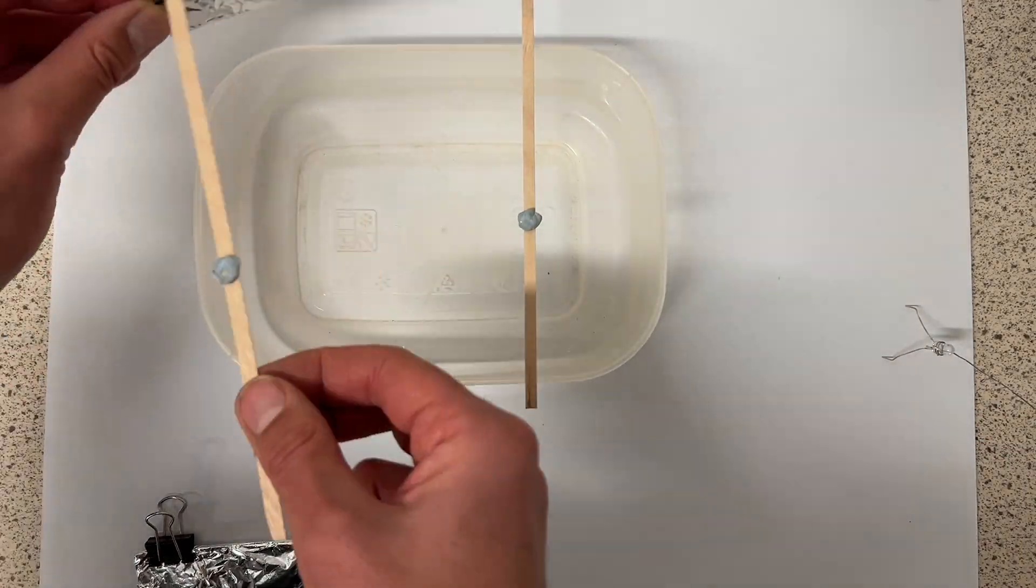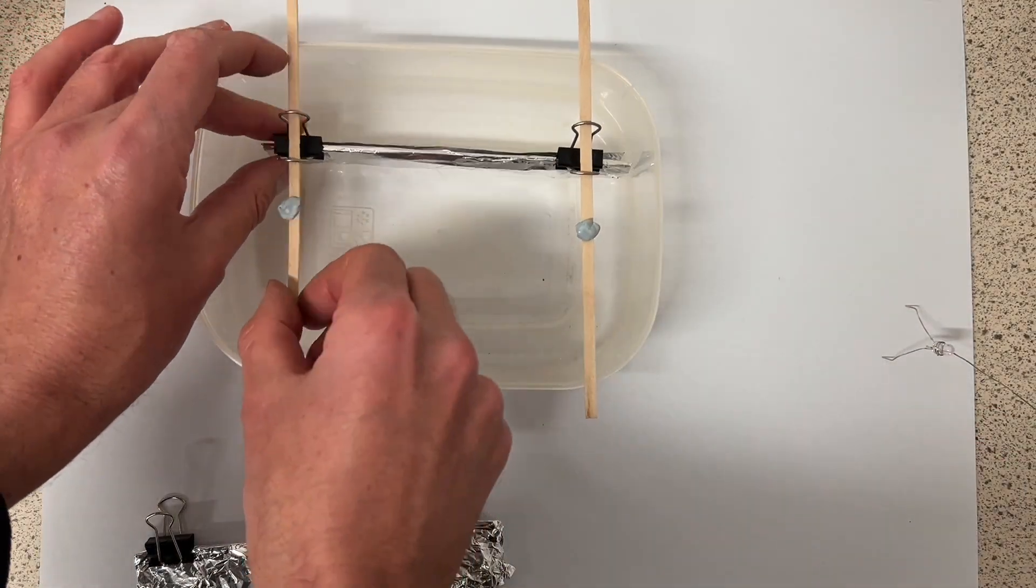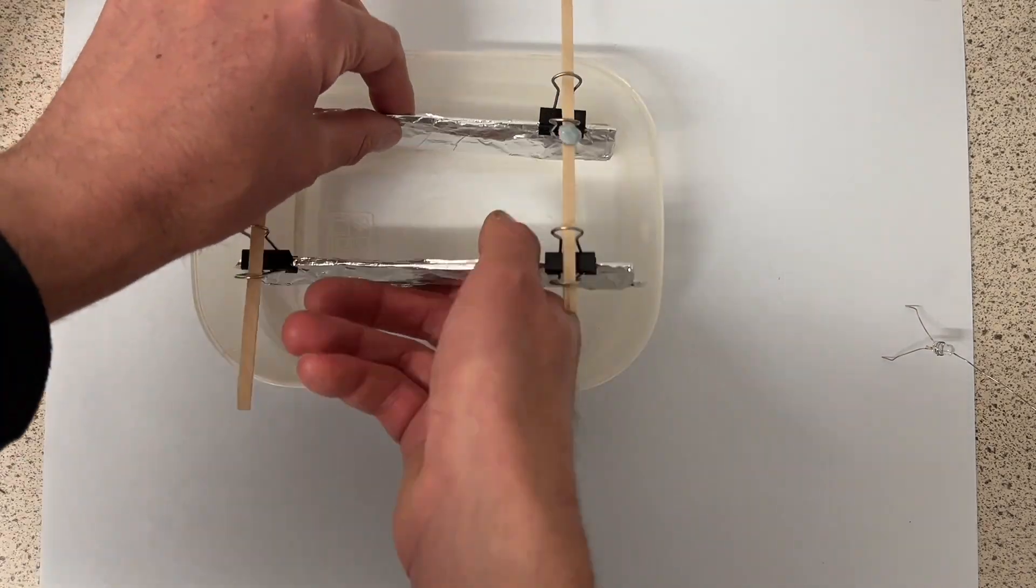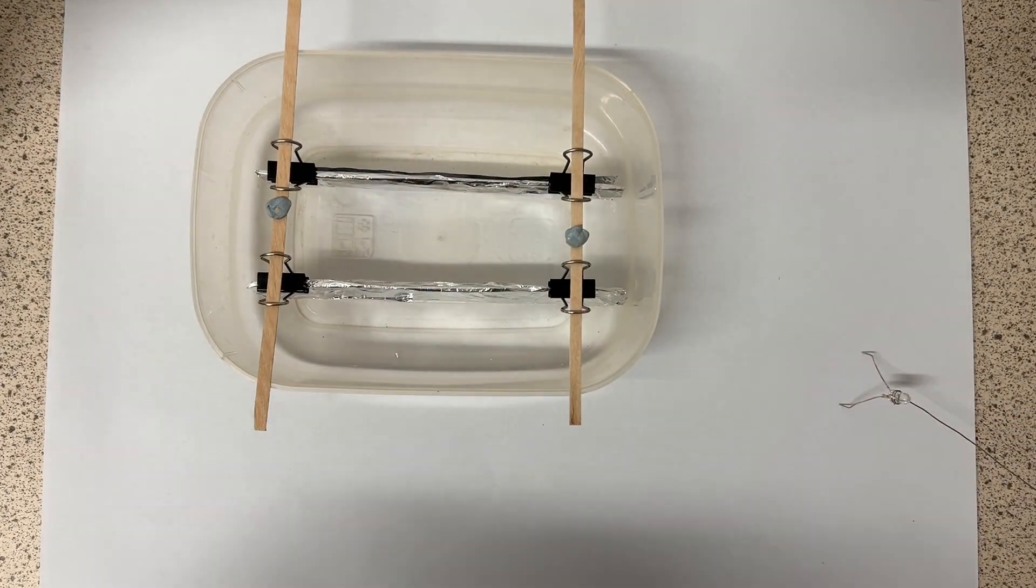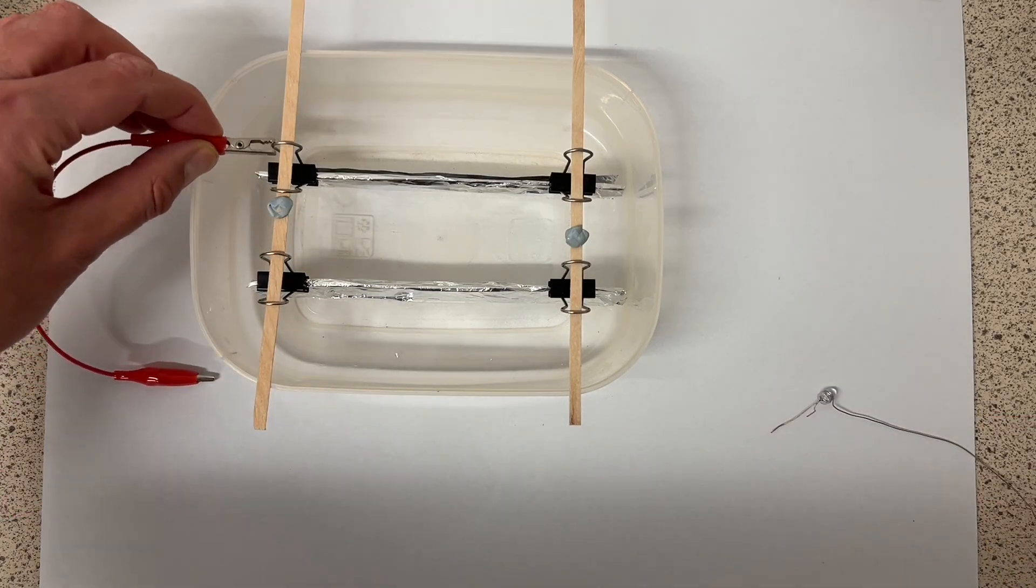Then you can use your splints or pencils to support them hanging down into the plastic tub. I've got a little blob of blue tack in the middle of both splints to make sure that my two electrodes don't touch each other.